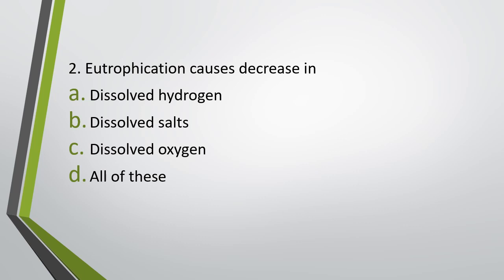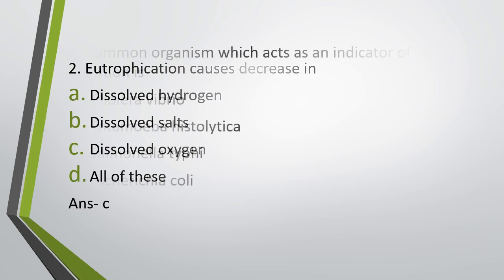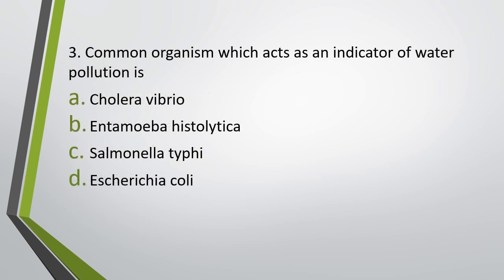Correct answer is option C: dissolved oxygen. Question number three: The common organism which acts as an indicator of water pollution is — (a) Vibrio cholerae, (b) Entamoeba histolytica, (c) Salmonella typhi, (d) Escherichia coli. Correct answer is option D: Escherichia coli.